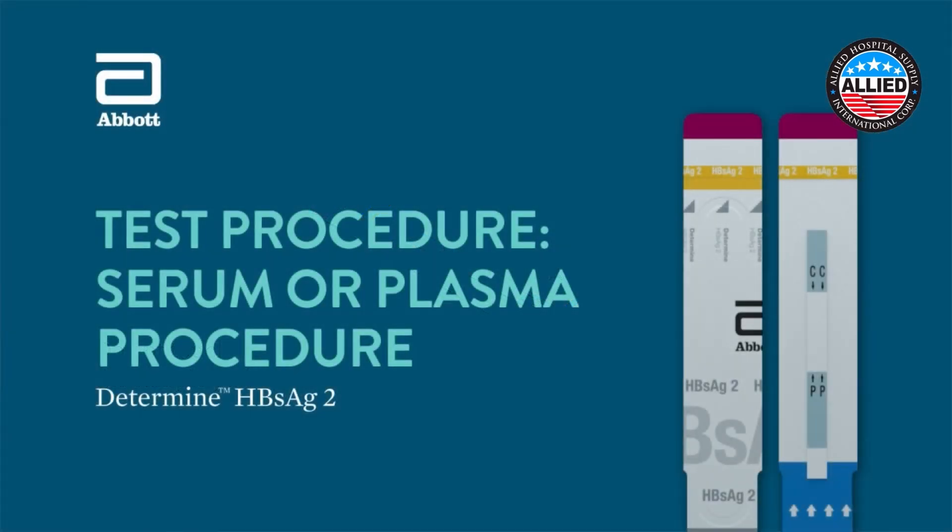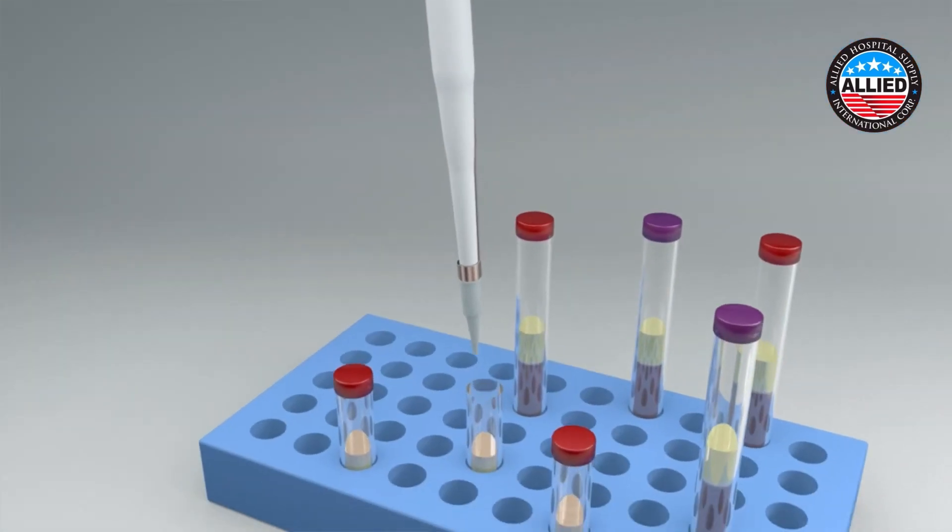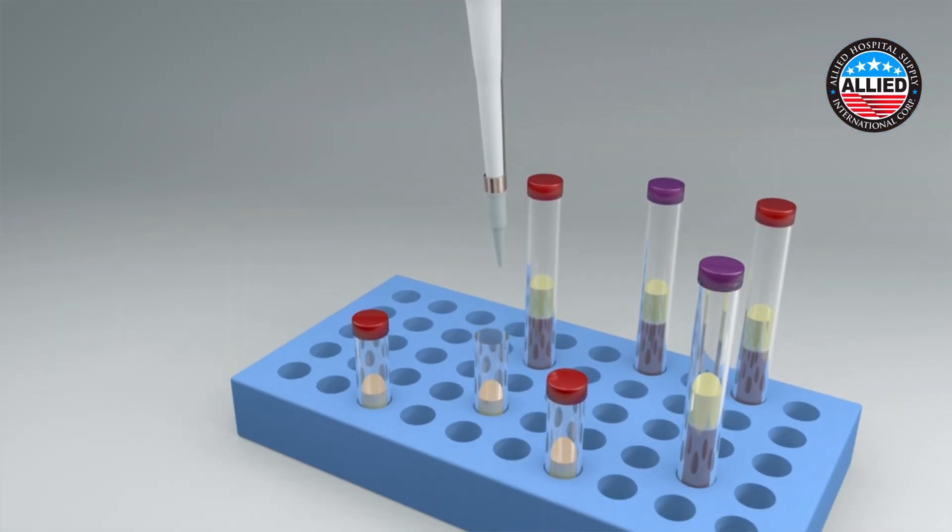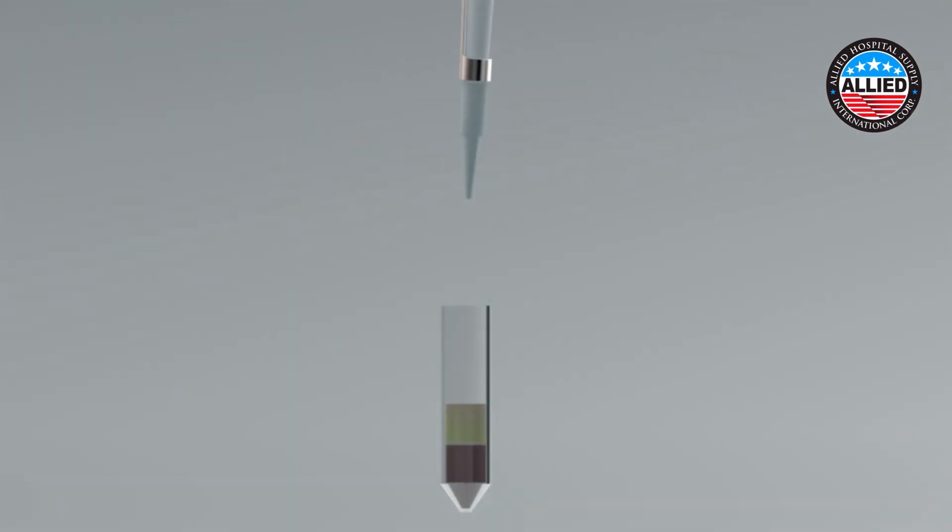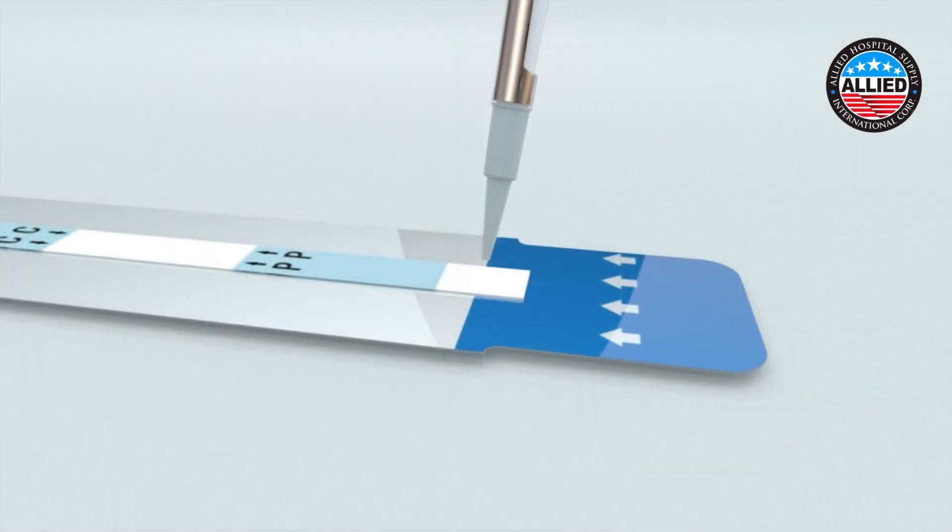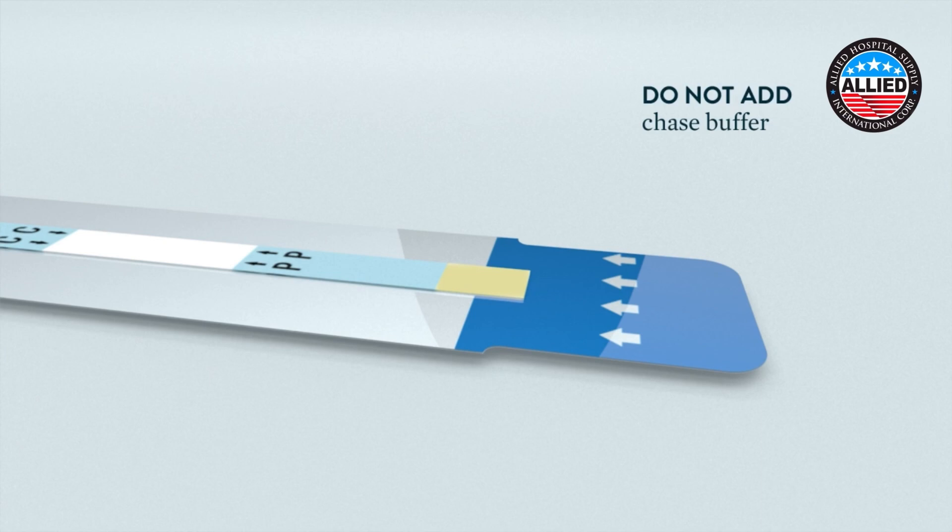Serum or plasma procedure. Carefully remove the 50 microliter test sample from the supernatant. If a lipid layer is formed on the surface of the liquid, ensure that the sample is taken from the clear liquid below that layer. Apply serum or plasma sample by touching the tip of the precision pipette to the sample pad. Do not add chase buffer when using serum or plasma specimens.